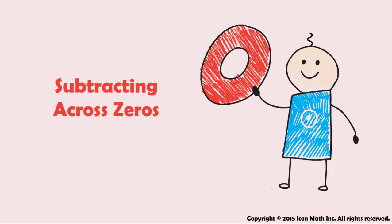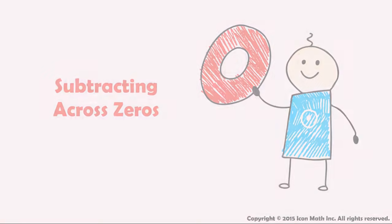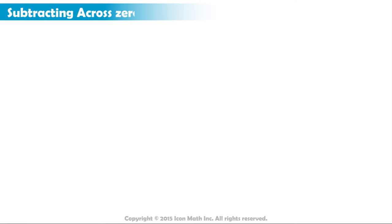Subtracting across zeros. What is the result of subtracting 472 from 6000?